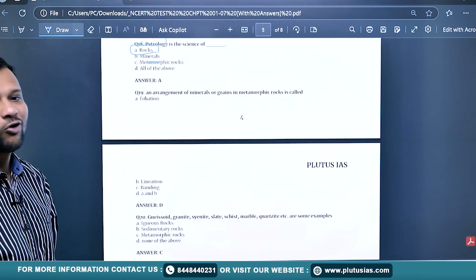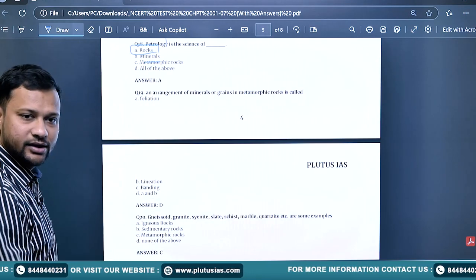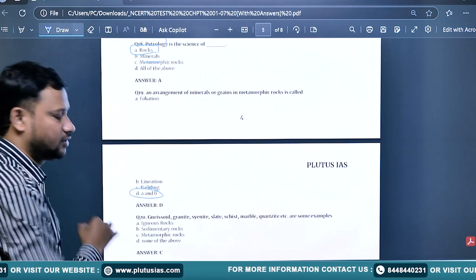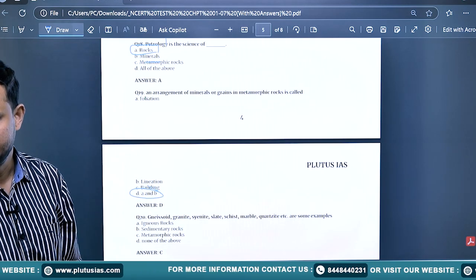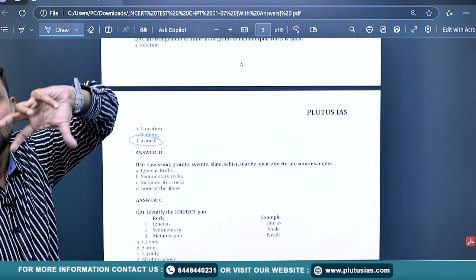The arrangement of minerals or grains in metamorphic rock is called foliation and lineation. The answer is A and B both - the foliation and lineation, the parallel arrangement and folding arrangement due to pressure.